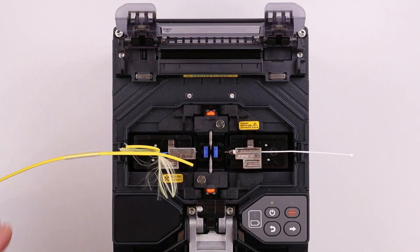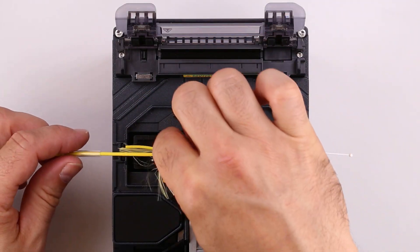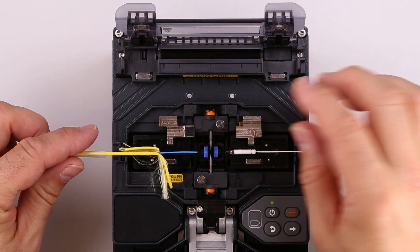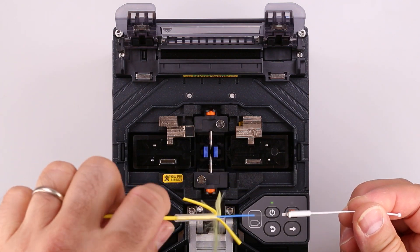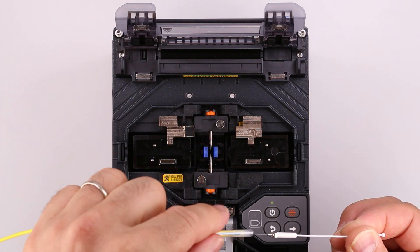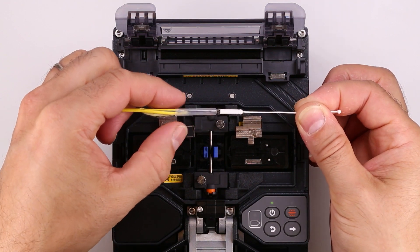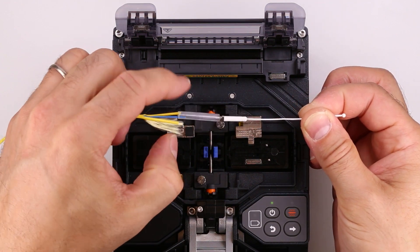Open the wind protector. Slide the protective sleeve up to the left clamp. Open the left clamp, then the right. While keeping tension on the splice, remove it from the clamps and slide the protective sleeve over the fiber. Remove the cable aramid and jacket from within the tube.